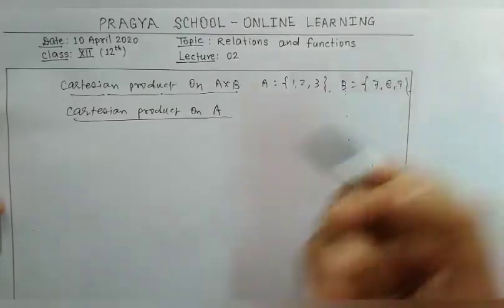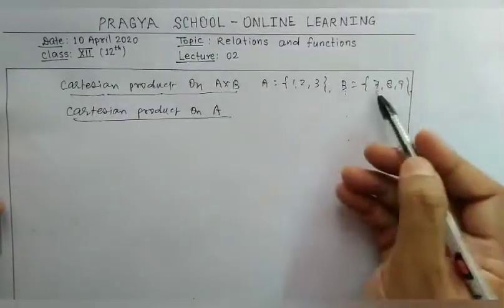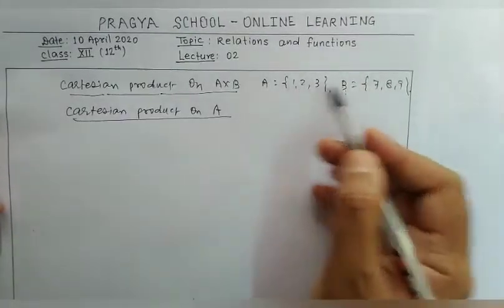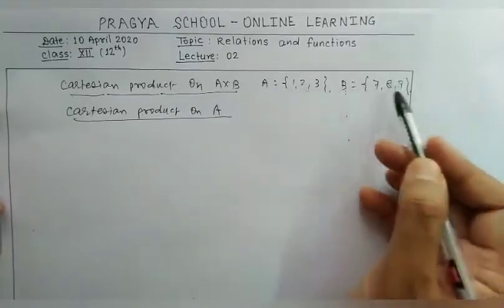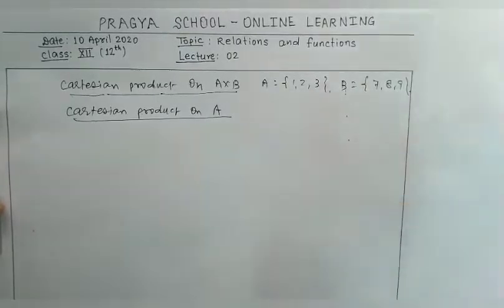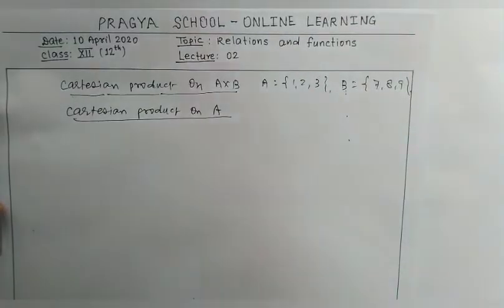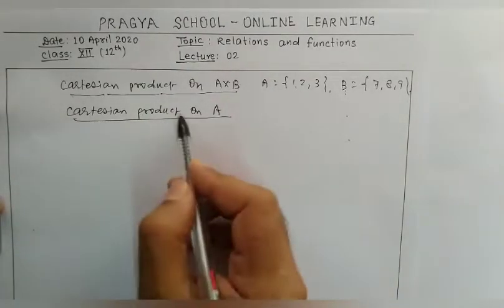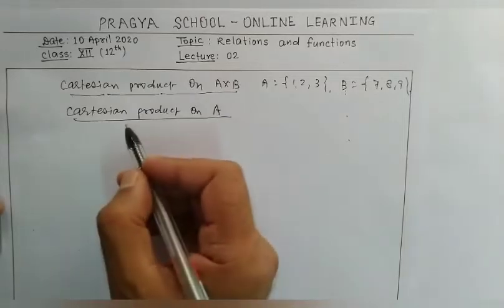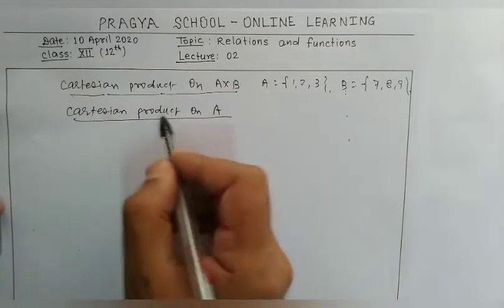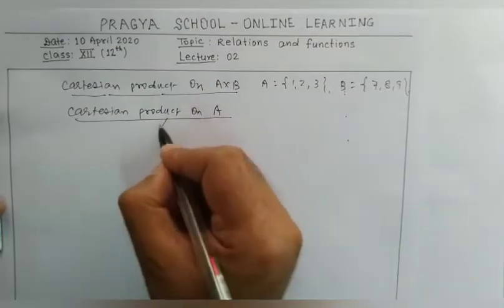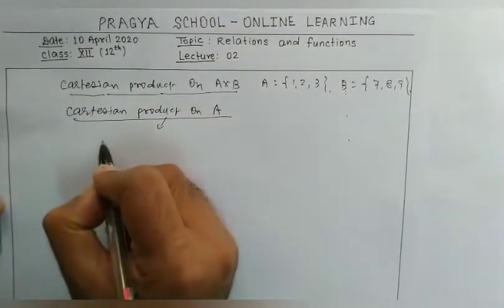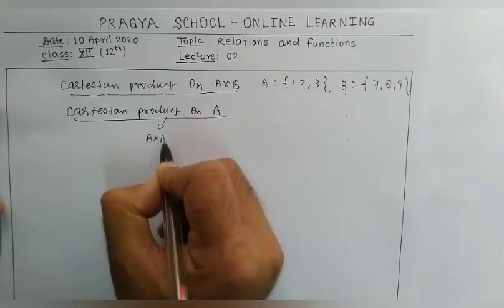If A = {1, 2, 3} and B = {7, 8, 9}, then A×B = {(1,7), (1,8), (1,9), (2,7), (2,8), (2,9), (3,7), (3,8), (3,9)}. This is the Cartesian product of sets A and B.